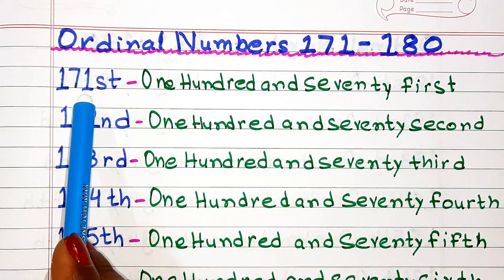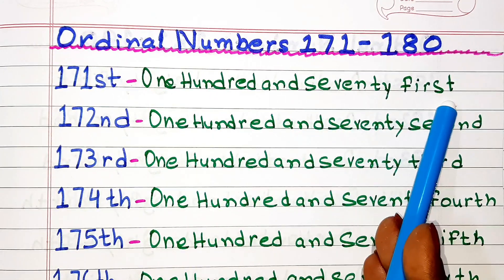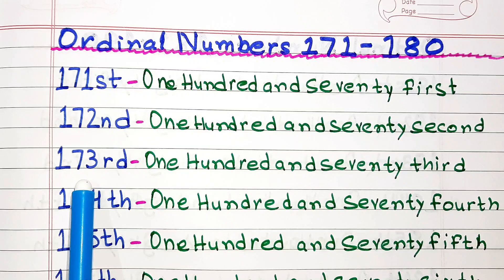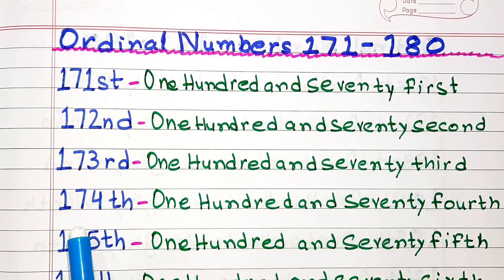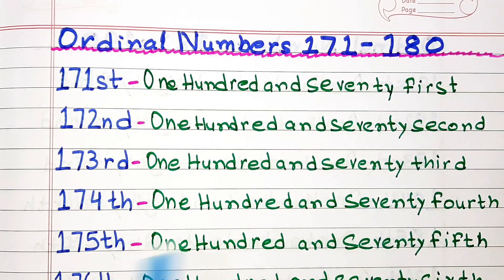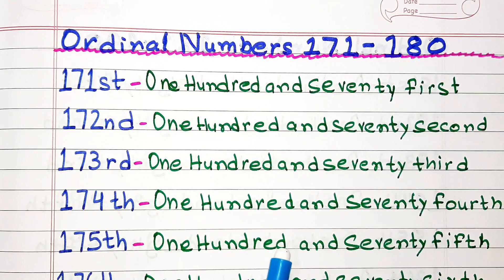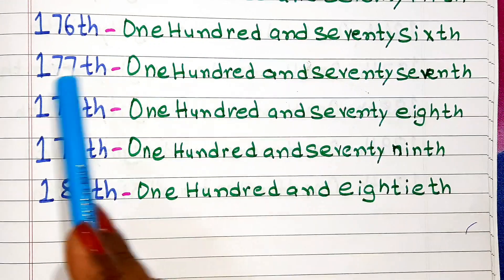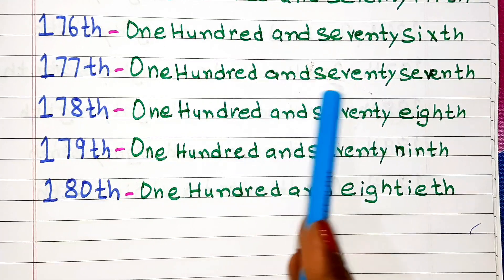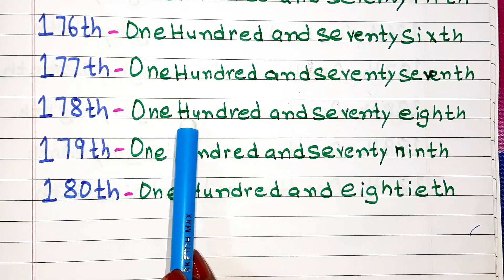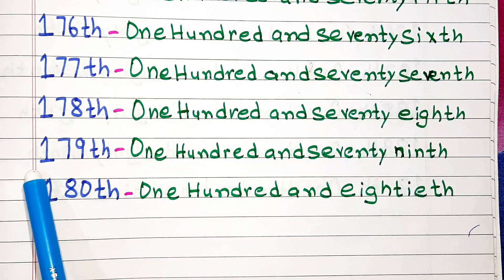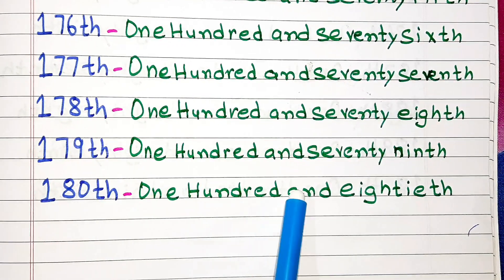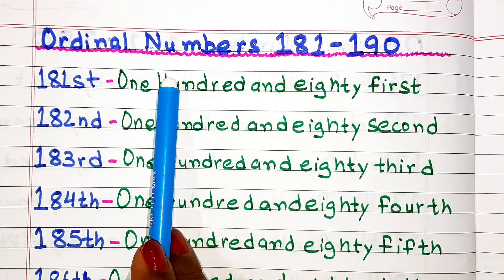Ordinal numbers from 171 to 180. 171st. 172nd. 173rd. 174th. 175th. 176th. 177th. 178th. 179th. 180th.